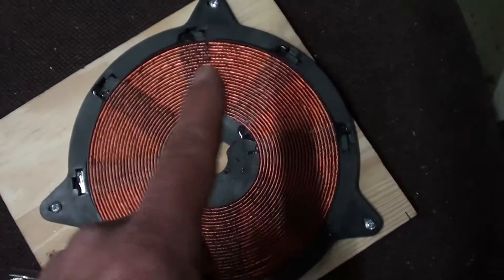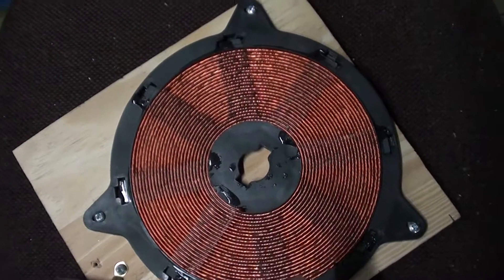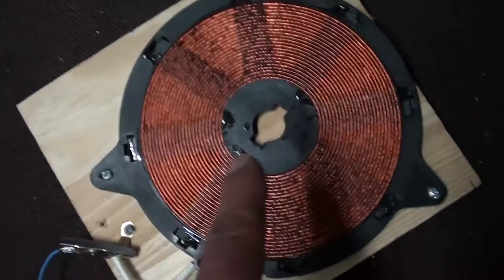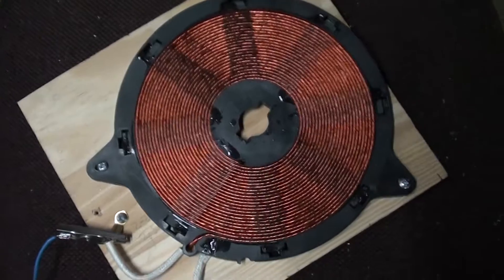Now, I don't know whether you can see, but there's eight of these ribs coming out from the centre. Now, on the underneath of this coil, they look like ferrite magnets.